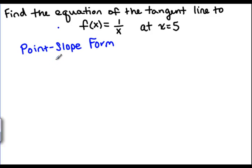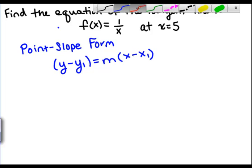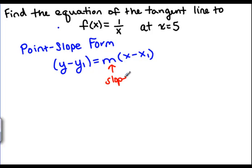So the point-slope form of a line looks like y minus y1 equals m times x minus x1. And the way you use this is you put your slope in for m, and then your point, you put the x value of the point here and the y value of the point here. And then you have a perfectly good equation of a line, and it's going to be a lot easier to do than using y equals mx plus b.